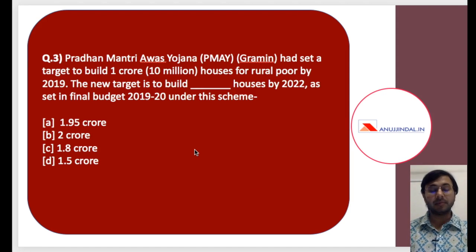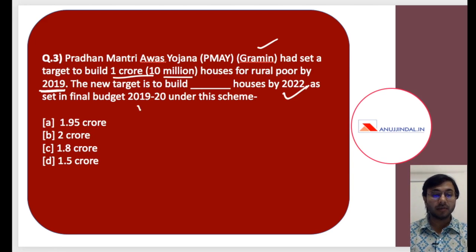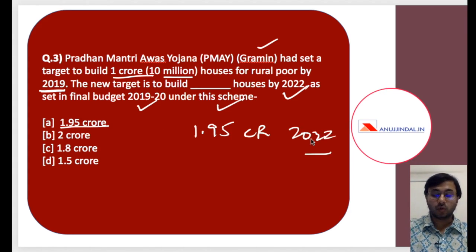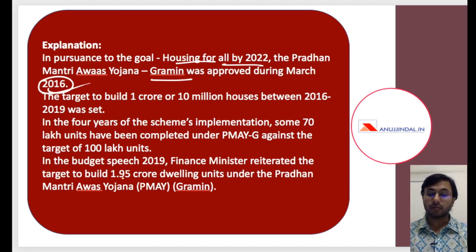The third question is on PM Awas Yojana Grameen, which had set a target to build 1 crore or 10 million houses for rural poor by the year 2019. A new target has been created to build how many houses by 2022 as set in the final budget 2019-20 under this scheme? The answer is A — 1.95 crore. The new target is to build 1.95 crore houses by 2022. The main goal is housing for all by 2022, and PM Awas Yojana Grameen has increased its target to 1.95 crore dwellings till 2022.